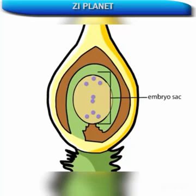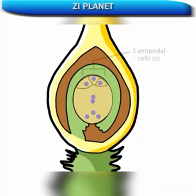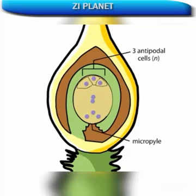Within the embryo sac, cell walls form between most of the nuclei. Three cells called antipodal cells form opposite the micropyle opening of the ovule. Three also form near the micropyle.